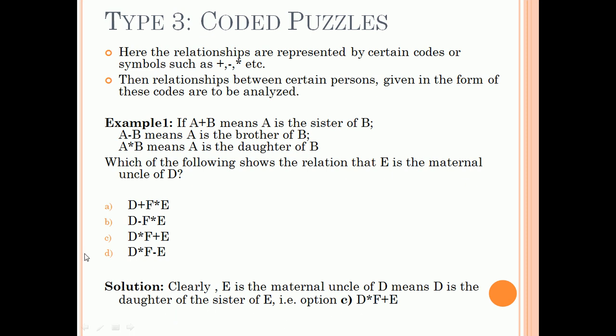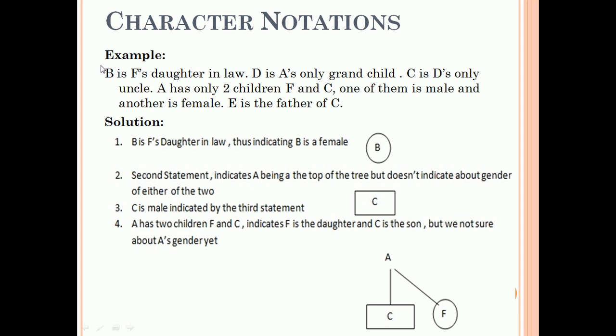Now we come to the next topic, which is family tree. Here is the example: B is F's daughter-in-law, D is A's only grandchild, C is D's only uncle, A has only two children F and C, one of them is male and another is female, E is the father of C. Now, B is F's daughter-in-law, thus indicating B is a female.